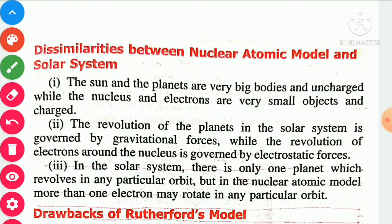Differences between the nuclear atomic model and the solar system: First, the sun and planets are very large bodies and uncharged, while the nucleus and electrons are very small objects and charged. Second, in the solar system only one planet revolves in any particular orbit, but in the nuclear atomic model more than one electron may revolve in any particular orbit.